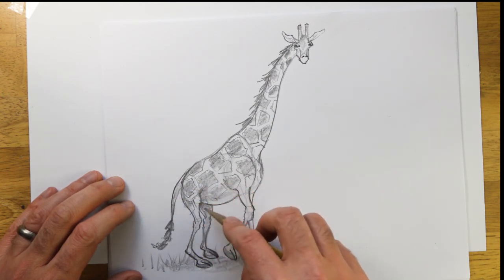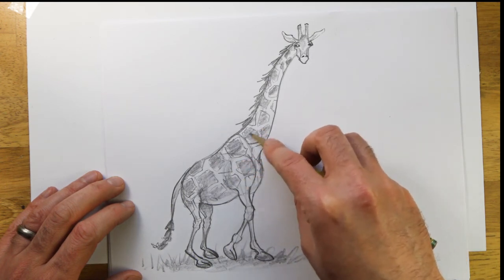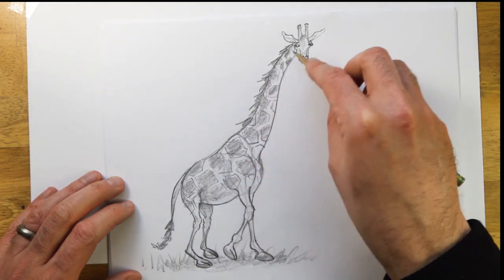So the belly kind of wraps under that leg. Maybe a little bit in the back. A little bit towards the back of the neck.